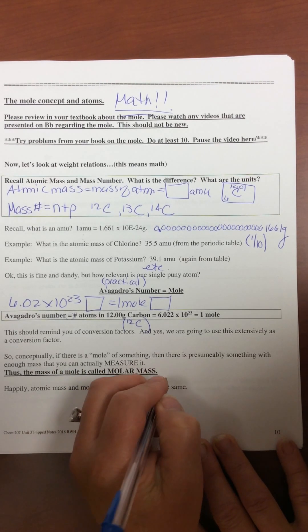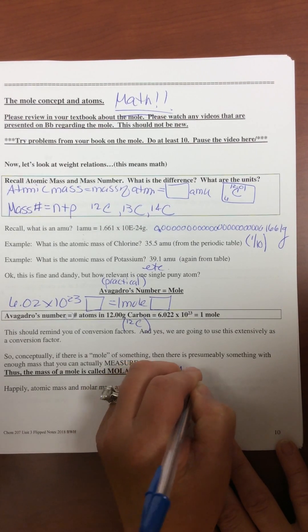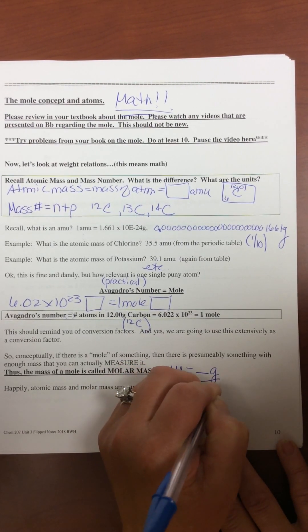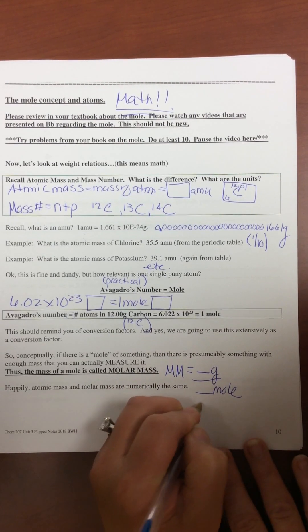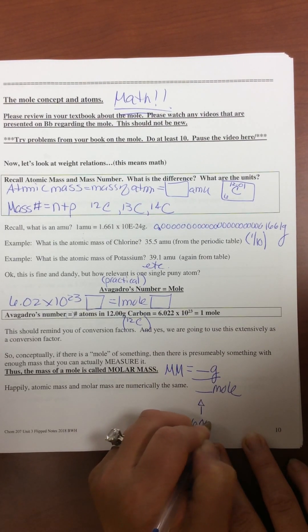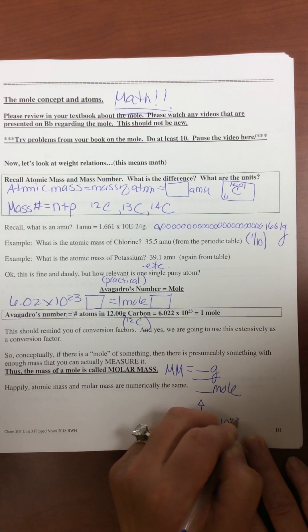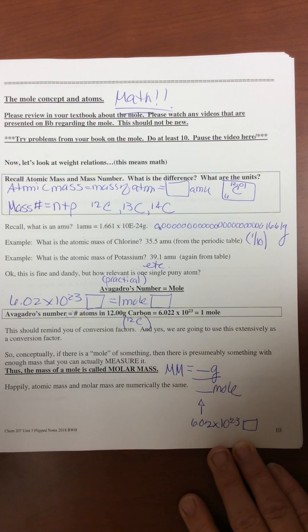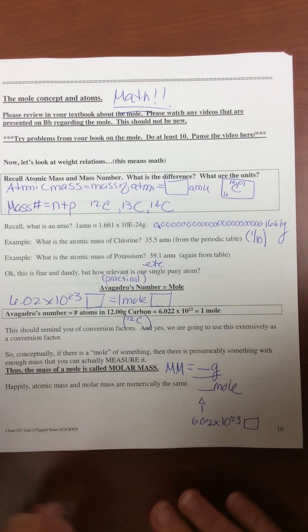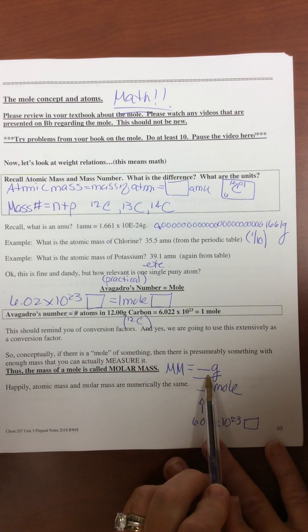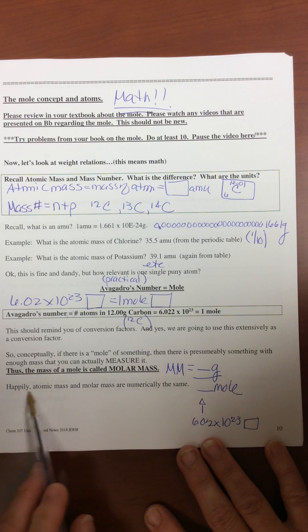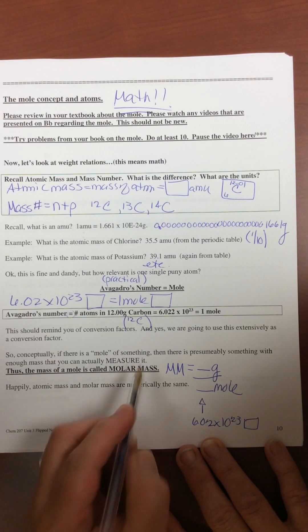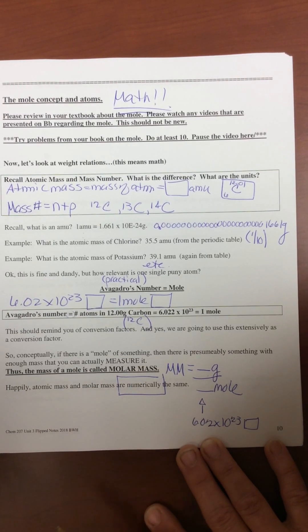So molar mass is grams per mole. We're going to have 6.02 times 10 to the 23rd atoms, or whatever, and it's going to have some mass. Now happily, atomic mass and molar mass are numerically the same. The units are vastly different.